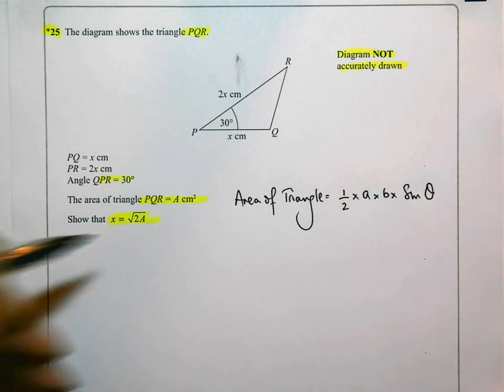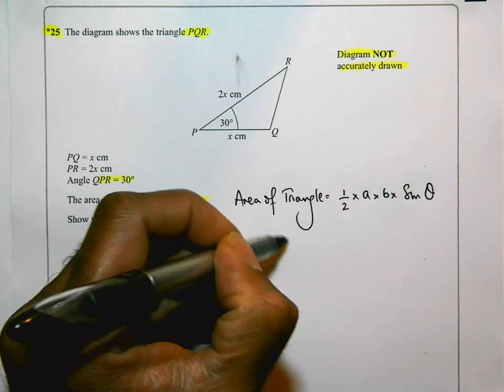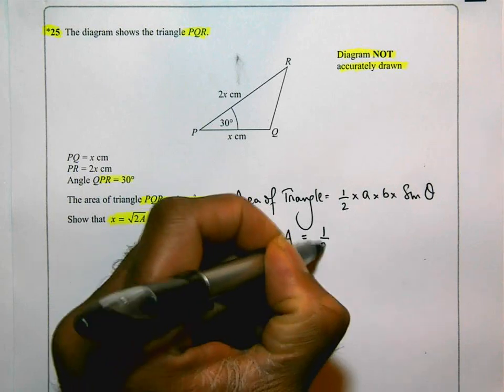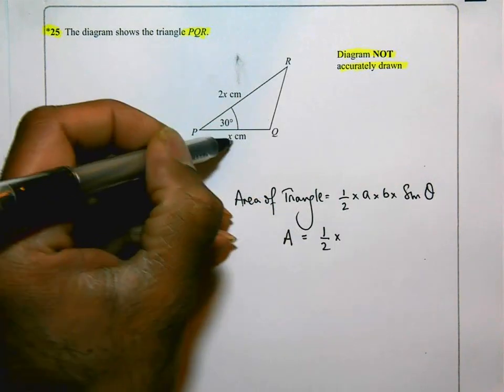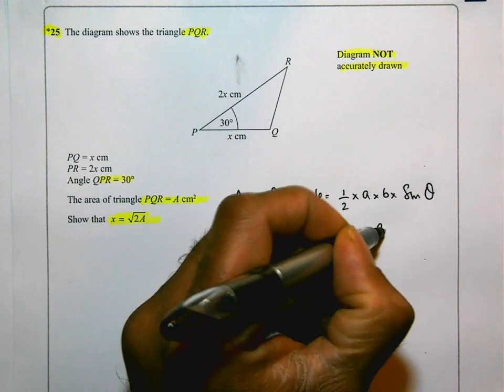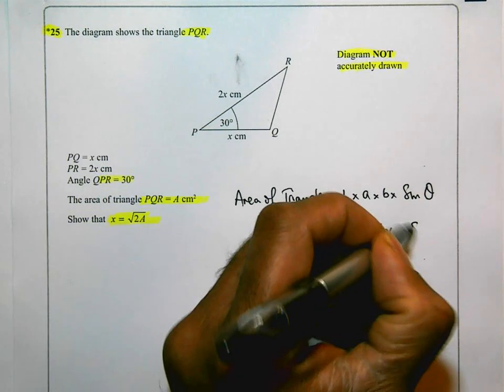And in this particular case, we know that the area of the triangle is A. And we know the two sides. One of the sides is X. The other side is 2X. And the angle between them is 30 degrees. So sine 30.